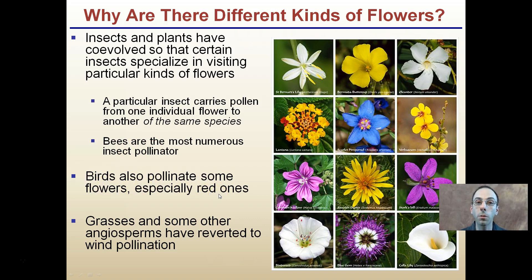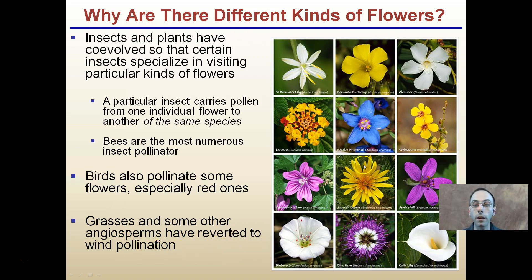So if you have a hummingbird feeder, typically you put red dye in it. Grasses and some other angiosperms have reverted to wind pollination, so just because there are insect pollinators, they don't necessarily pollinate everything.